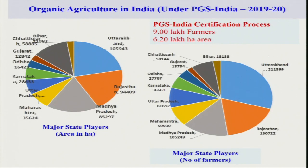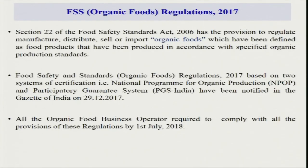If we look at organic agriculture by states, Rajasthan and Uttarakhand have different types of PGS certification processes. The maximum organic producer area is Uttarakhand at 1 lakh, Rajasthan at 94,000, and Madhya Pradesh also consistently ranks well. Regarding organic regulations in India, the Food Safety Standards Act 2006 has provisions to regulate the manufacture, distribution, and import of organic foods. All organic food business operators are required to comply with all provisions of this regulation by July 2018.